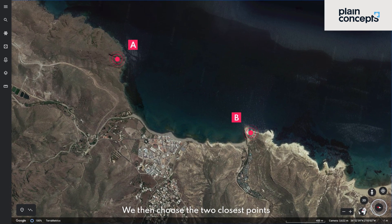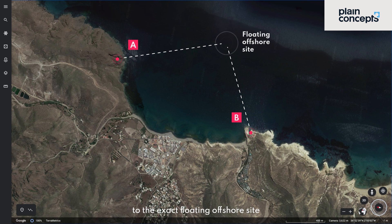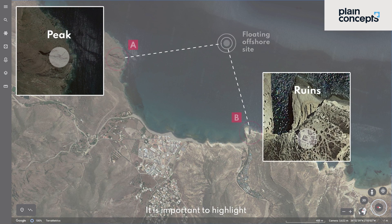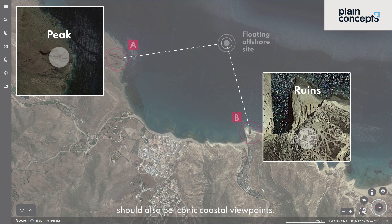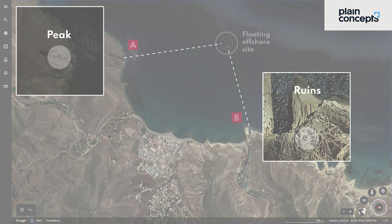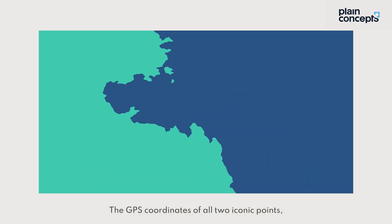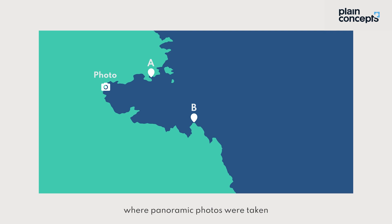We then choose the two closest points to the exact floating offshore site to minimize precision errors. It is important to highlight that these two points should also be iconic coastal viewpoints. The GPS coordinates of our two iconic points, plus the GPS coordinates of the exact position where panoramic photos were taken, yield interesting information through the use of trigonometry.